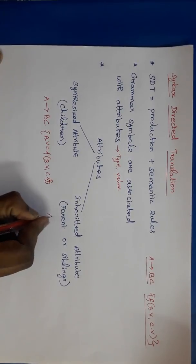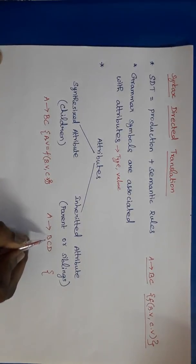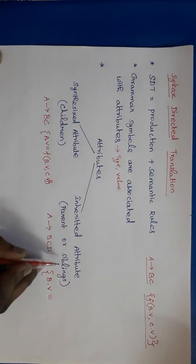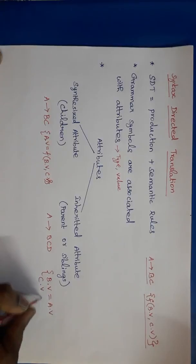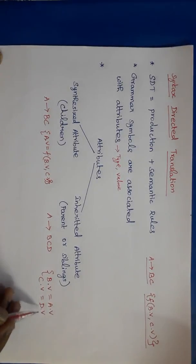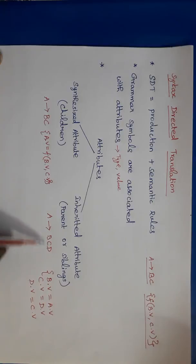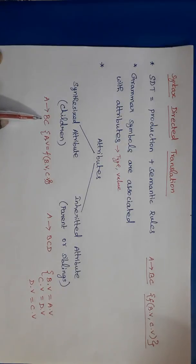In inherited attribute, if you consider A tends to BCD, then B.V — the value of B — can be evaluated from the parent A or from its siblings C and D. Similarly, C can be evaluated from D, C.V = D.V, and D.V can be A.V, B.V, or C.V. So, inherited attribute means it can be evaluated from the parent or from the siblings.